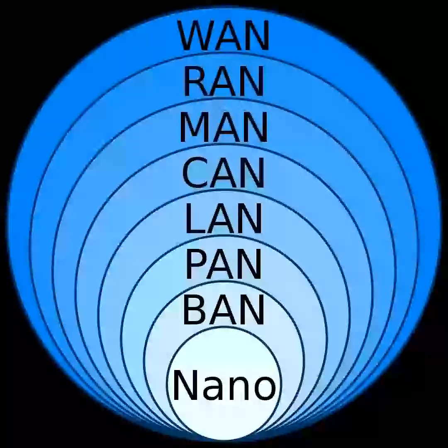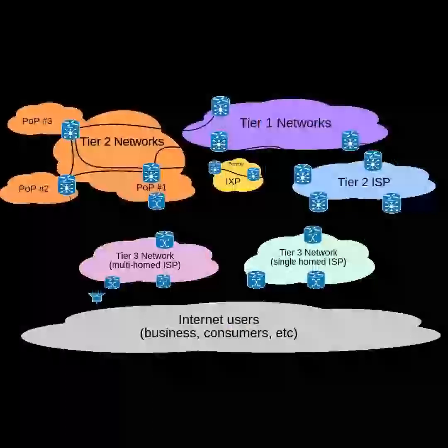Under the Communications Assistance for Law Enforcement Act, all U.S. telecommunications providers are required to install packet-sniffing technology to allow federal law enforcement and intelligence agencies to intercept all of their customers' broadband internet and VoIP traffic.